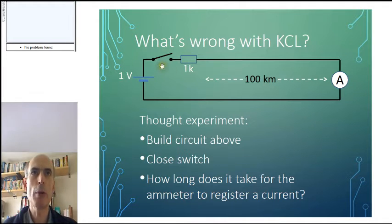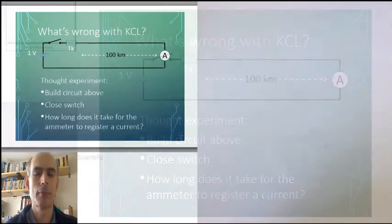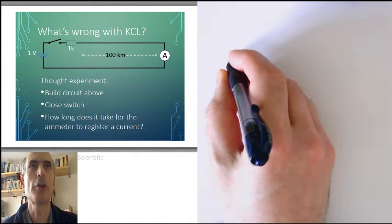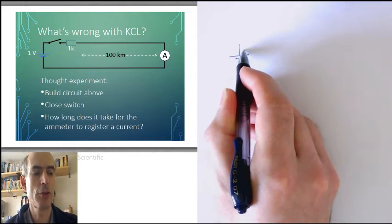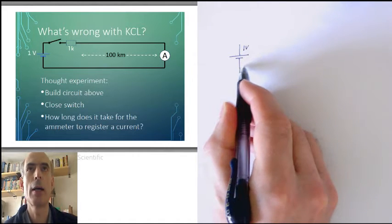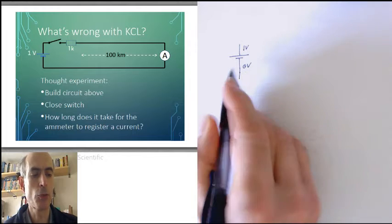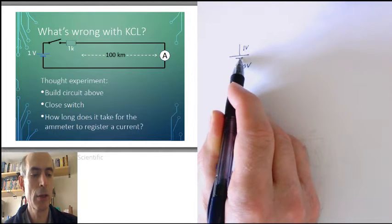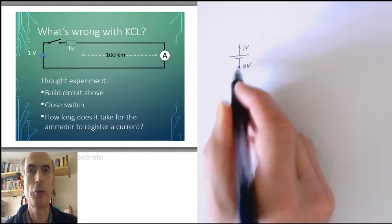Close the switch. What happens? Well, just before the switch is closed, the voltage at this point here in the circuit would be 1 volt, if we define the voltage at this point here in the circuit as being 0 volts. That's what this voltage cell does. It forces this point here to be 1 volt above this point here.